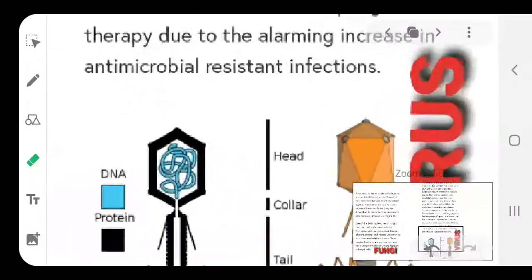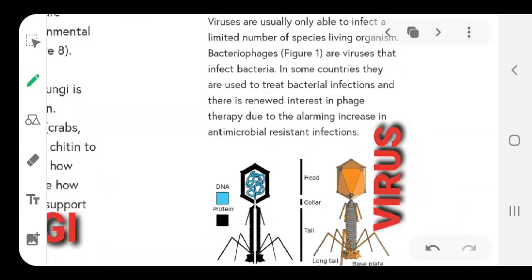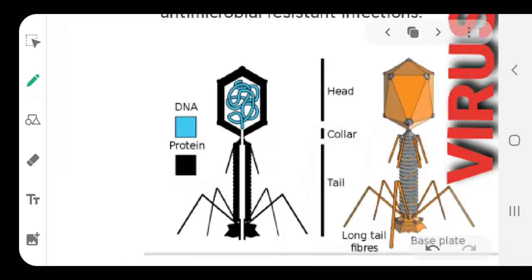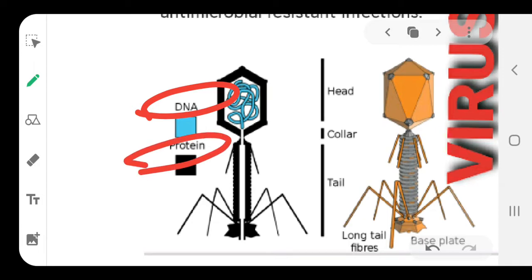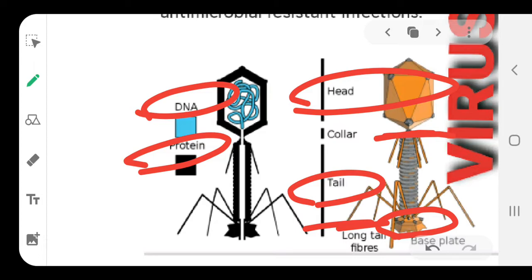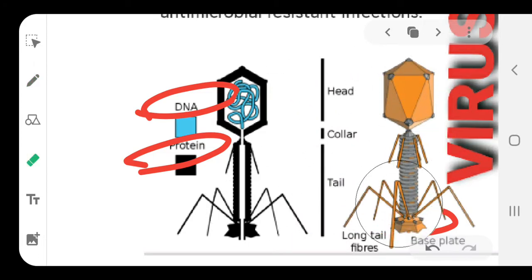Let us look at the structure of a virus. Viruses consist of two main components: DNA and protein. The parts are as follows: first is the head, then a collar, then a long tail and long tail fibers, then the base plate. So the labeling parts are head, collar, tail, tail fibers, and base plate. Draw this diagram properly.